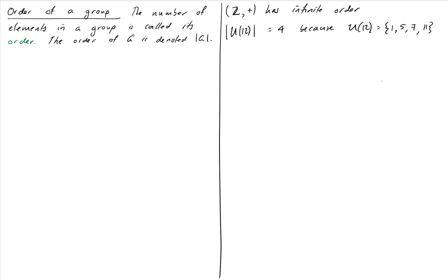So groups can have finitely many elements, in which case they have a finite order. Or a group could have infinitely many elements, in which case we say it has infinite order.